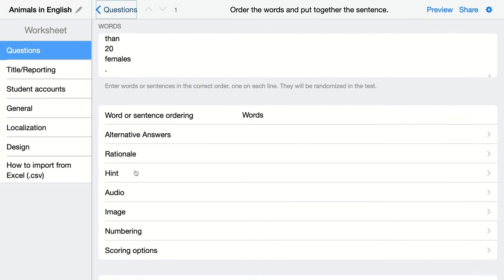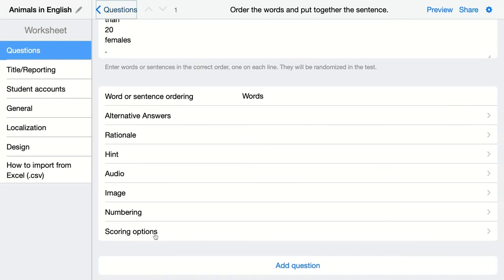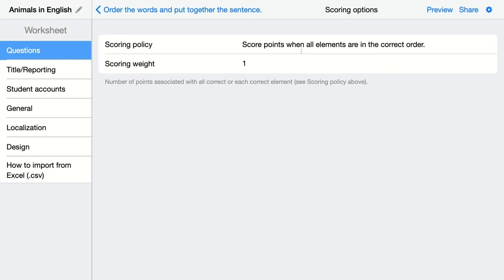You can add an explanation, a hint, audio, image. And of course, there are the scoring options, which are also important. Here, students can score points when all elements are in the correct order, or they can score points for each element in the correct position. So this changes whether the students have to know everything or just all the elements. And if they have one thing wrong, it shouldn't take that much points. When you choose score points when all elements are in the correct order, they will just score one point for this particular sentence. In this case, this is fine by me, and they will get two points when they have this question right.